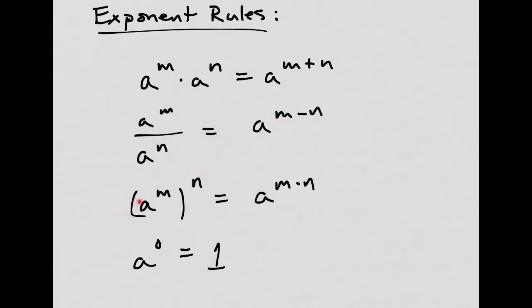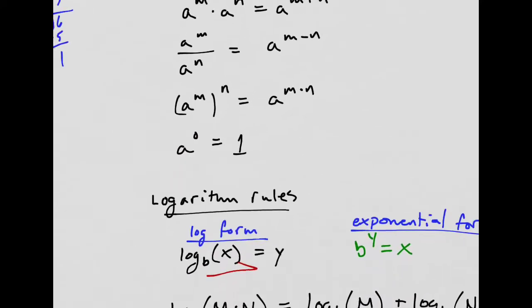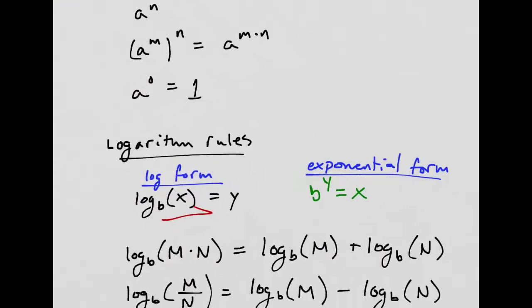If you have a base to an exponent raised to another power, then you multiply the two. It's kind of like you distribute. If there's more than one thing in here, the n would go to both of those things, or all three, or however many you have. Anything to the zero power is one. This is important. That's like one of the special cases.